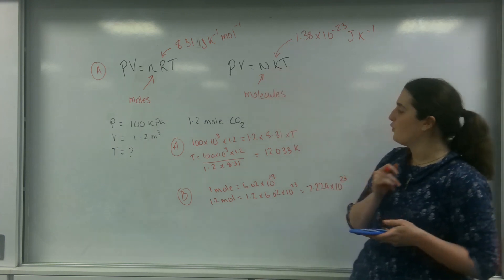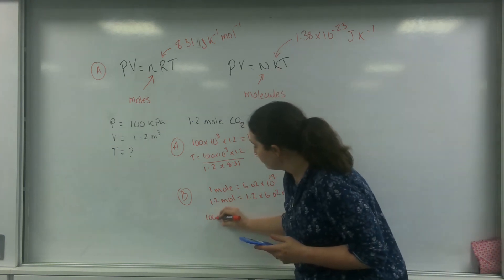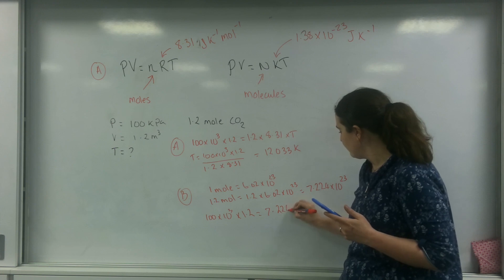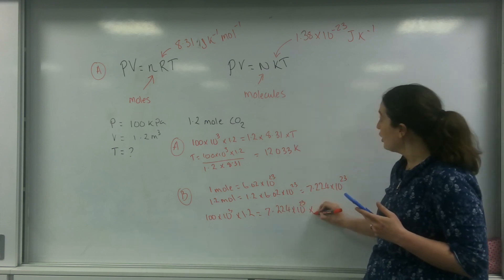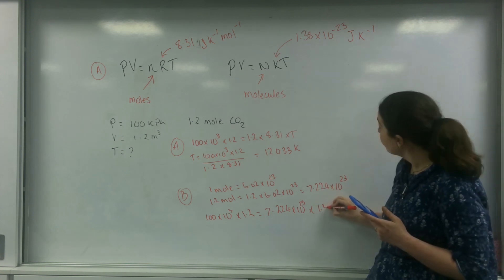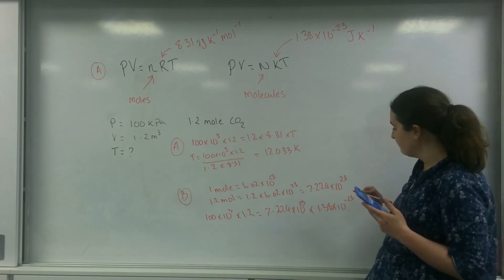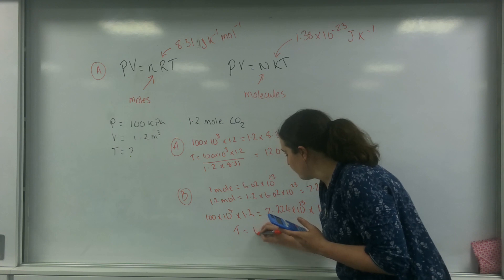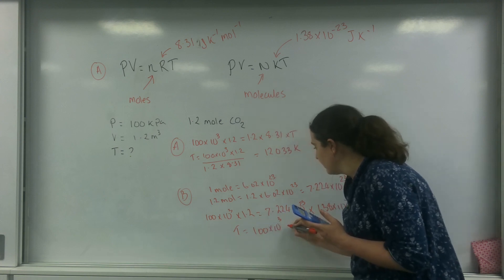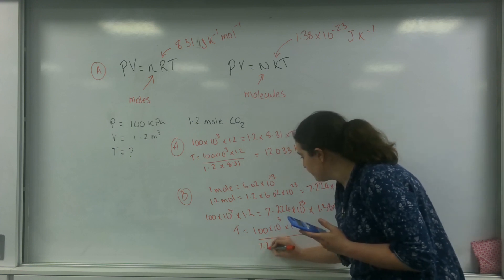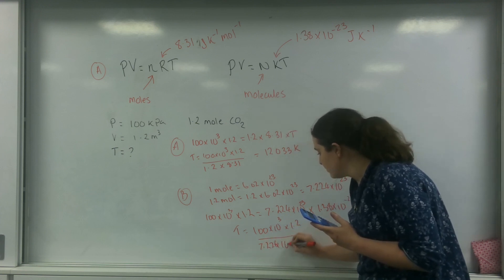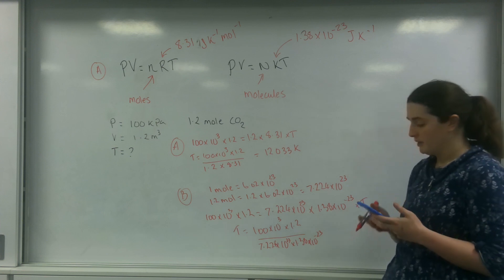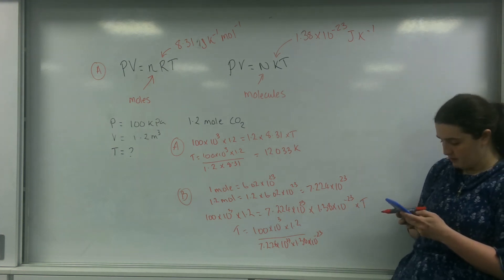And this value I can use in this formula here. So again, I know 100 times 10 to the 3 times by 1.2 equals 7.224 times 10 to the 23 times by Boltzmann's constant, which is 1.38 times 10 to the minus 23 times by T. So T is going to equal 100 times 10 to the 3 times by 1.2 all over 7.224 times 10 to the 23 times by 1.38 times 10 to the minus 23.